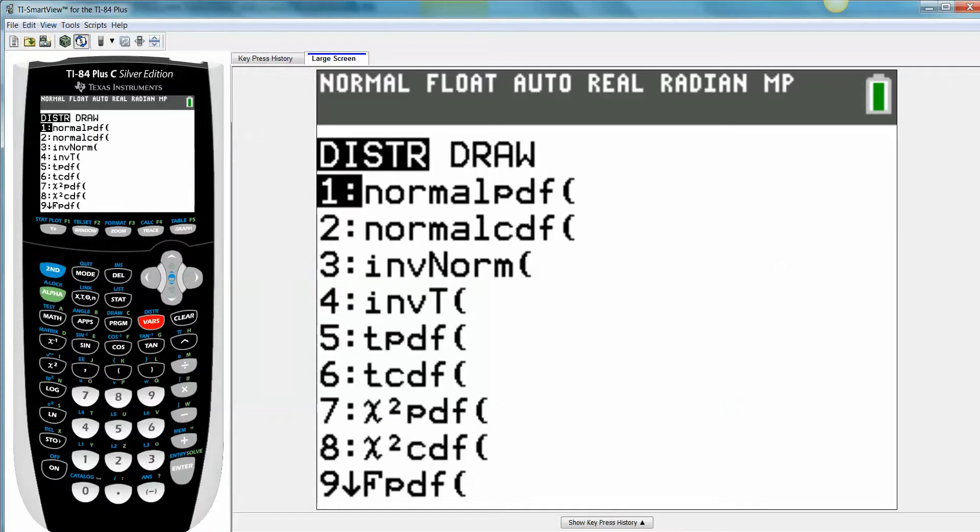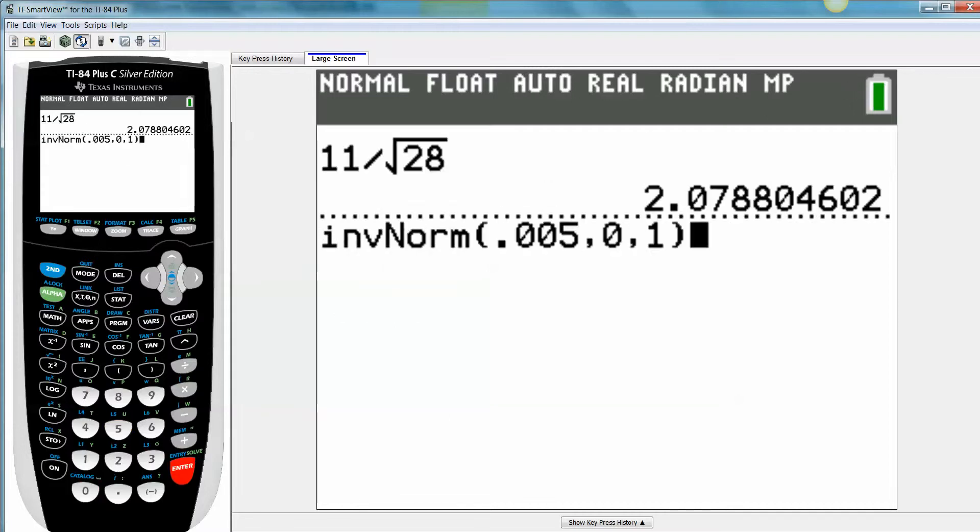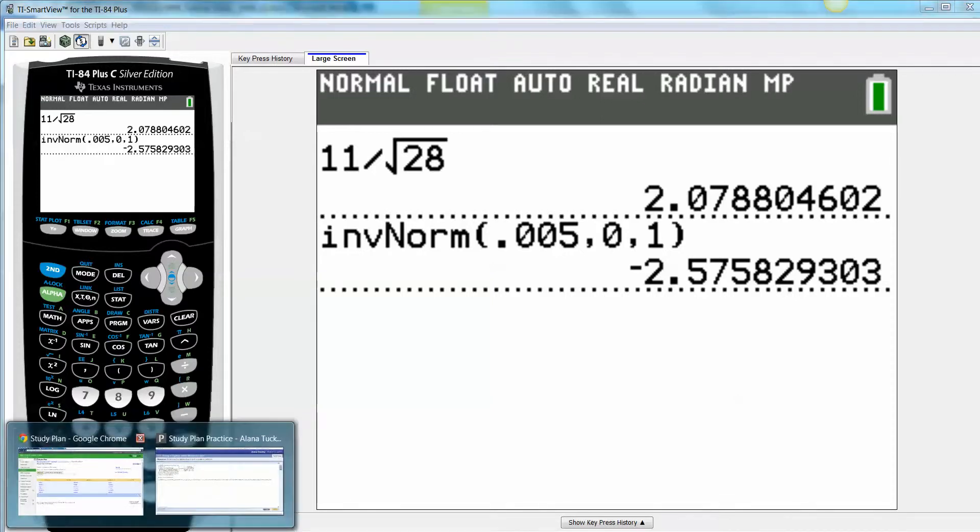If you're going to use your calculator to find that value, you'd use second, inverse norm, .005, enter, zero, enter, one, enter, there you go, enter, and there it is, there's the negative one right there.